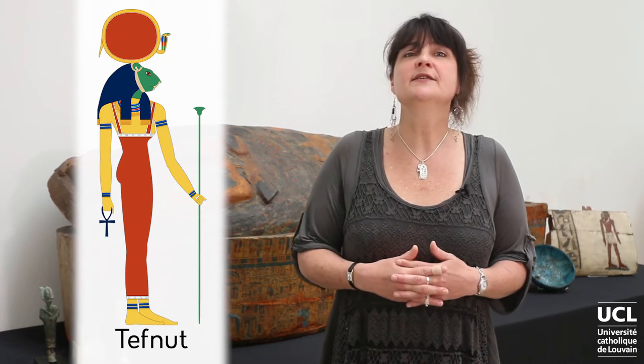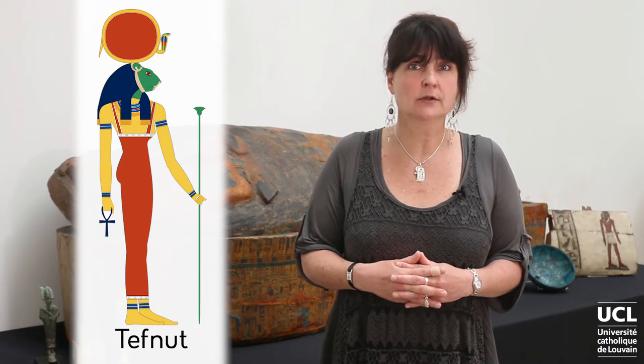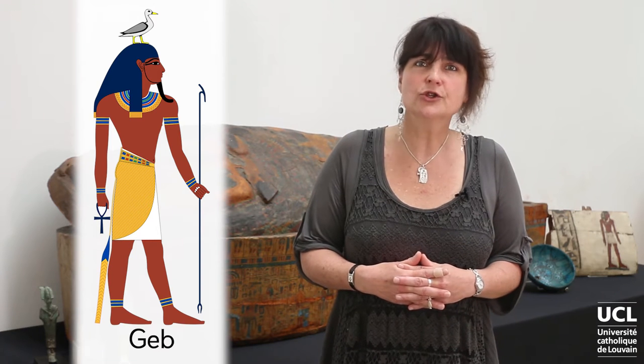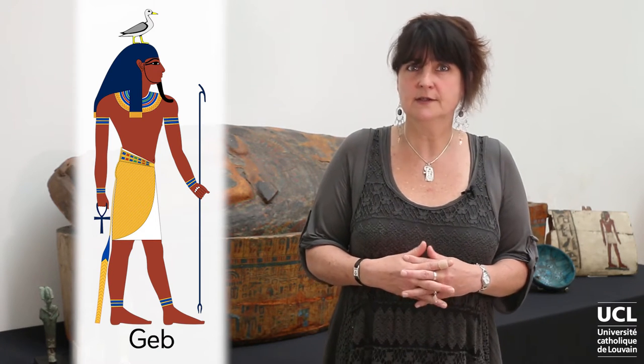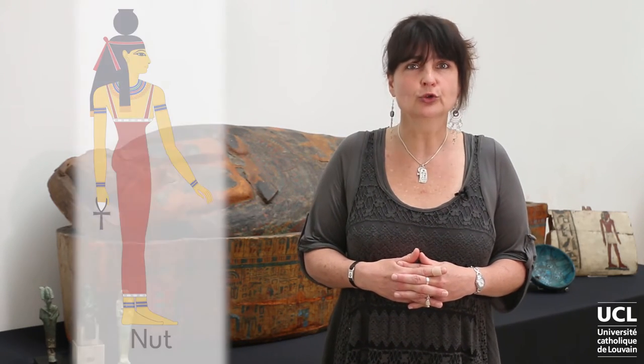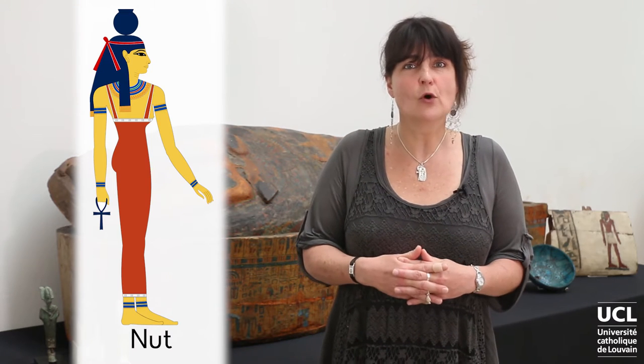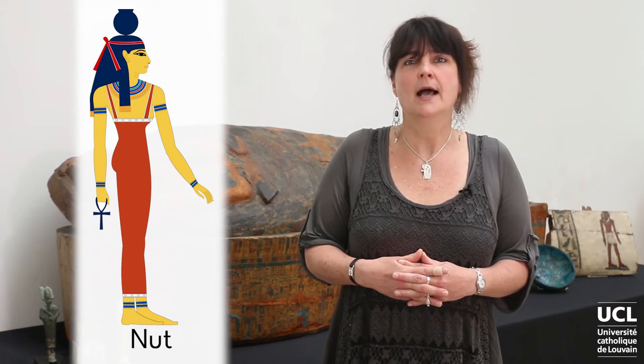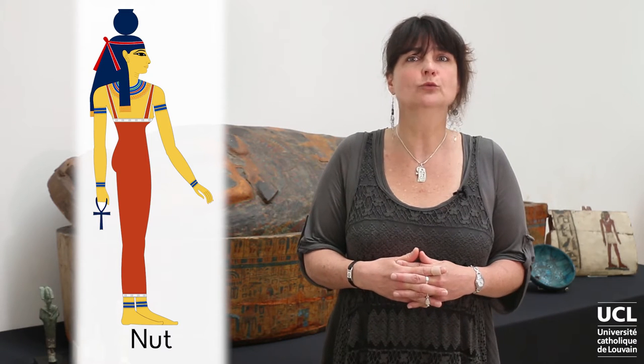In the second stage of the creation process, Shu and Tefnut were also blessed with a son and a daughter. The son, Geb, is the god that personifies the earth. He is usually depicted anthropomorphically — that is to say, in the form of a human being — and sometimes with a white-fronted goose, a creature that the Egyptians in this period associated with creation. His sister, called Nut, was the goddess that personified the vault of the heavens, and once again, she was married to her brother Geb.